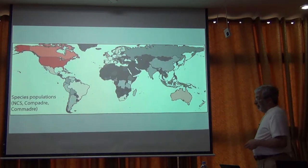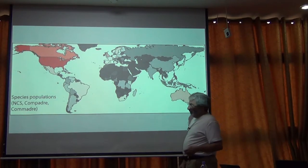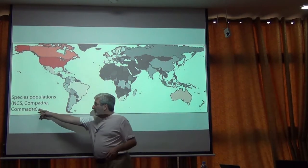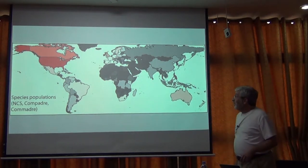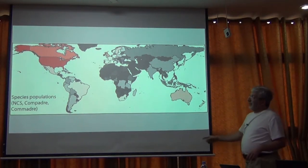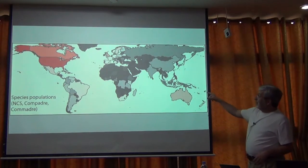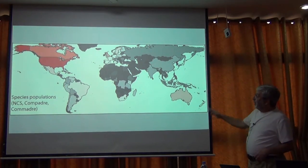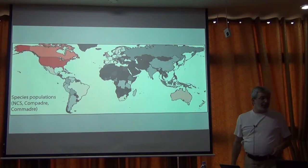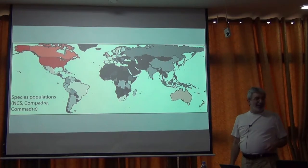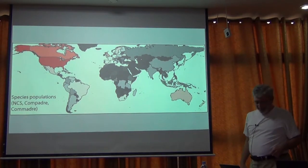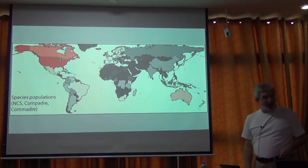Here are data on species populations, another of the EBVs. You can see the sources, especially Comadre and Compadre. And what you see again is North America, Australia, and Europe — and then everything in the middle, that kind of diagonal stripe across the world, if you look at things in a Mercator projection, is relatively less populated by data.